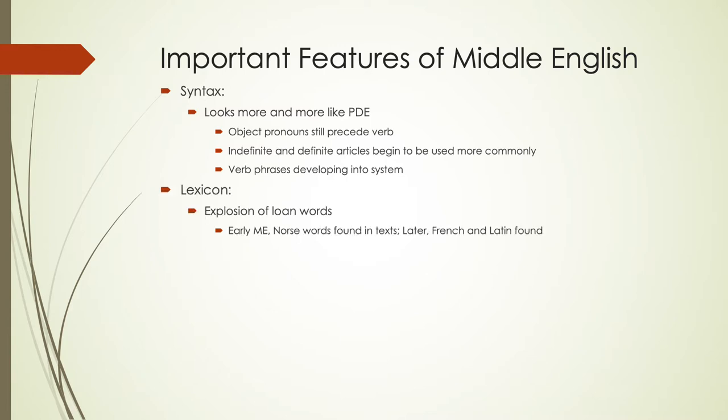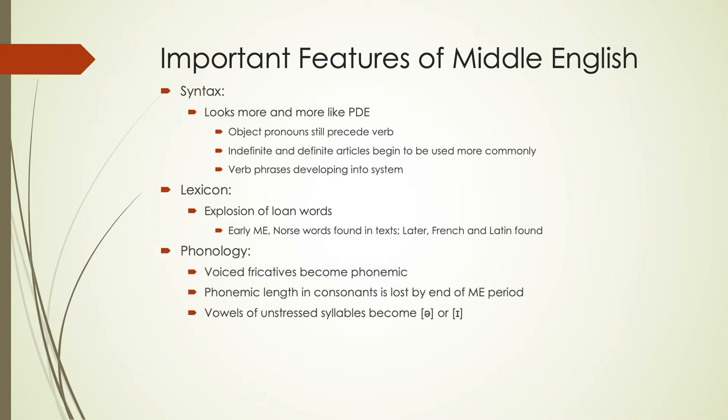In terms of lexicon, we start seeing an explosion of loanwords. So early in Middle English, Norse words were found in texts. Later we see a lot more French and Latin influence, and we'll talk a little bit about some of that.